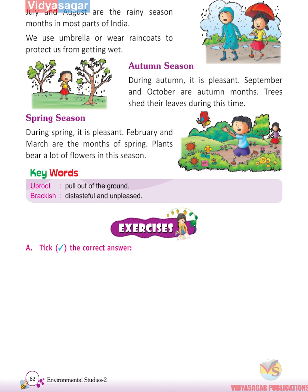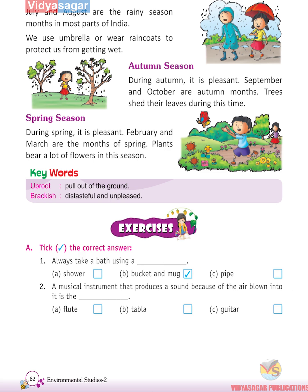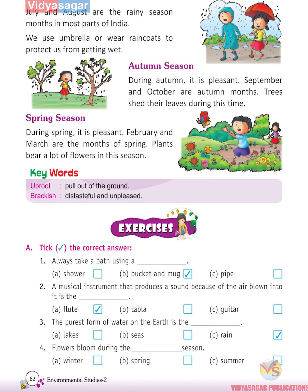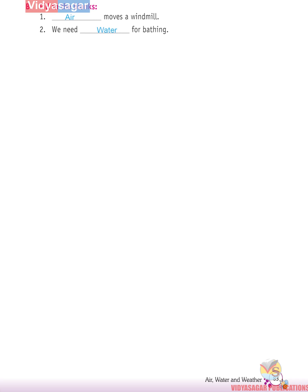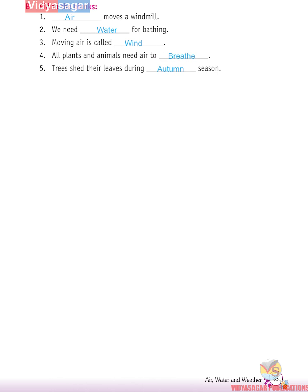Exercises — Tick the correct answer: Always take a bath using a bucket and mug. A musical instrument that produces sound because of air blown into it is the flute. The purest form of water on earth is rain. Flowers bloom during the spring season. Fill in the blanks: Air moves our windmill. We need water for bathing. Moving air is called wind. All plants and animals need air to breathe. Trees shed their leaves during the autumn season.